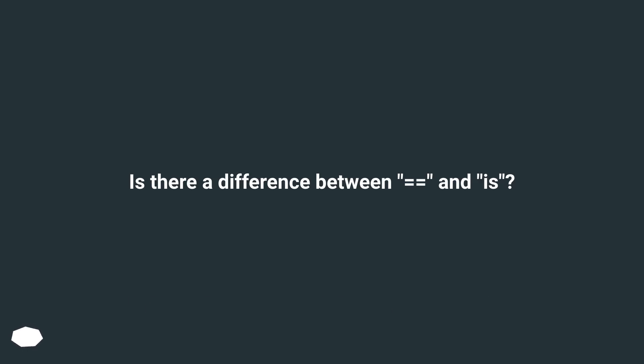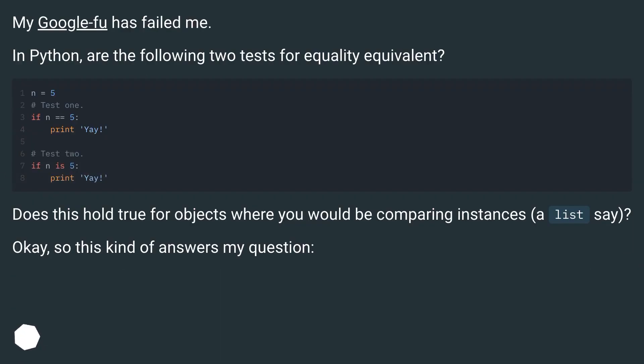Is there a difference between equals equals and is? My Google foo has failed me. In Python, are the following two tests for equality equivalent? Does this hold true for objects where you would be comparing instances, a list A? Okay, so this kind of answers my question.